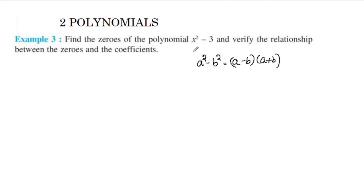We have y = x² - 3. What formula do we use? We use the a² minus b² formula. Here x² is a² and 3 needs to be expressed as a perfect square.